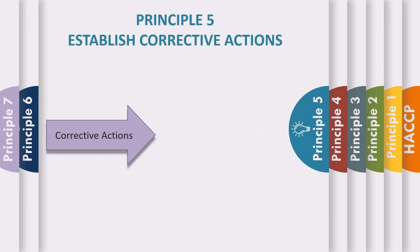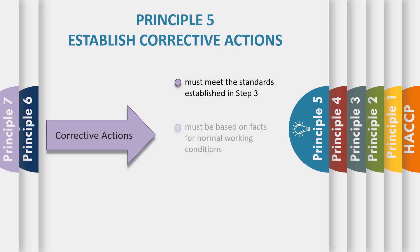Principle 5: Establish corrective actions. If the criteria for a critical control point is not being met, some type of corrective action must be taken. They must meet the standards established in Principle 3, must be based on facts or normal working conditions, and must be measurable. Corrective actions may range, for example, from continuing to cook until the established temperature is reached, to throwing out the product, depending on the severity of the situation.